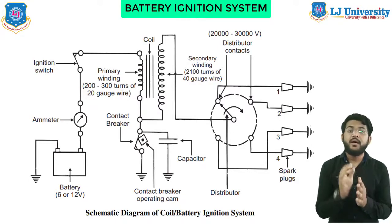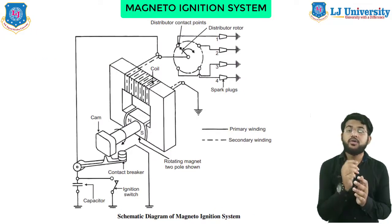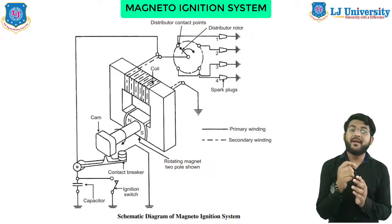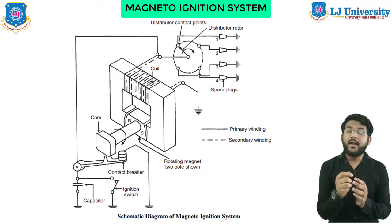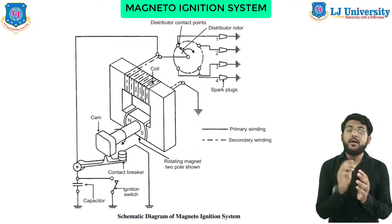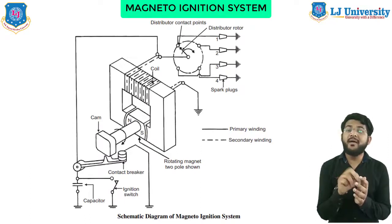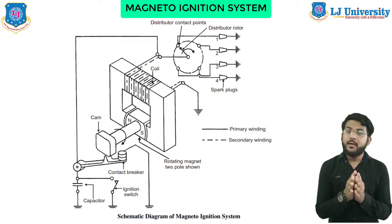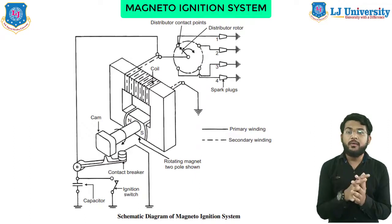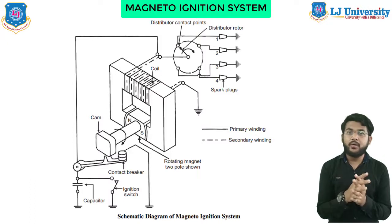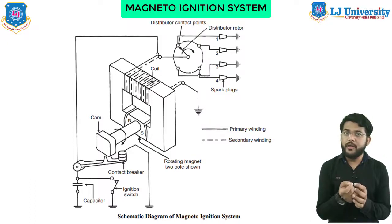In the magneto ignition system, the magneto produces and supplies the required current to the primary winding. As shown, we can have a rotating magneto with a fixed coil, or a rotating coil with a fixed magneto — one being the rotor and one the stator — for producing and supplying current to the primary winding. The remaining arrangement is the same as the battery ignition system. The only difference is that the magneto replaces the battery, with a rotating field and a fixed magneto.